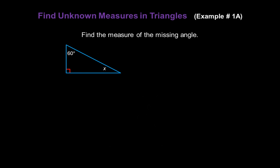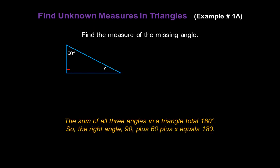Let's use that information to find unknown measures in triangles. Find the measure of the missing angle x in this figure. We know the sum of all three angles in a triangle total 180 degrees. So the right angle — 90 degrees — plus the 60-degree angle, plus our missing angle x, have to total 180 degrees.